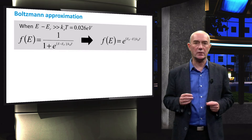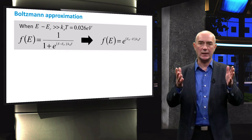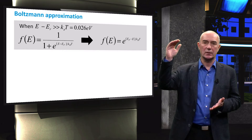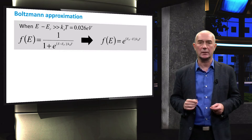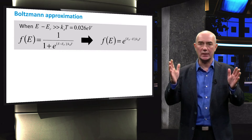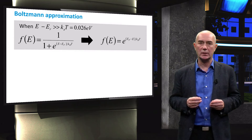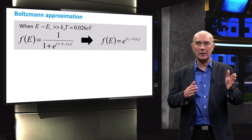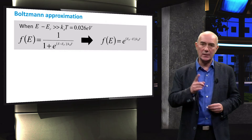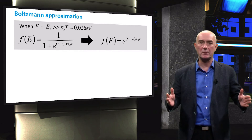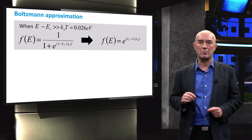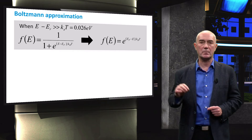The Fermi-Dirac distribution function gives the probability that a quantum state at energy E will be occupied by an electron. At elevated temperature, the allowed energy states above the Fermi level can be occupied. When the distance between an energy state and the Fermi level is much larger than the product of the Boltzmann constant and temperature, the exponential term in the denominator of the Fermi-Dirac function becomes much larger than 1, and the function can be approximated to a simple exponential term, known as the Maxwell-Boltzmann or Boltzmann approximation.